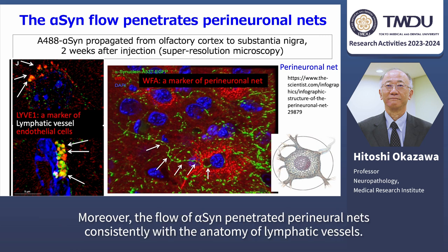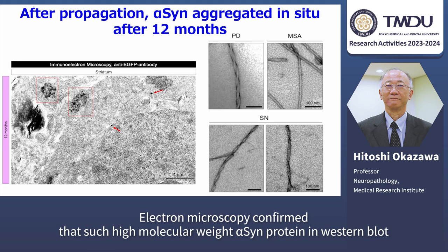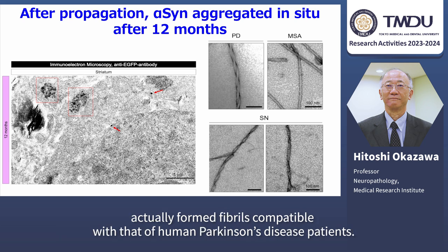Moreover, the flow of alpha-synuclein penetrated perineural nets, consistently with the anatomy of lymphatic vessels. Electron microscopy confirmed that such high molecular weight alpha-synuclein proteins in western blot actually formed fibrils compatible with that of human Parkinson's disease patients.